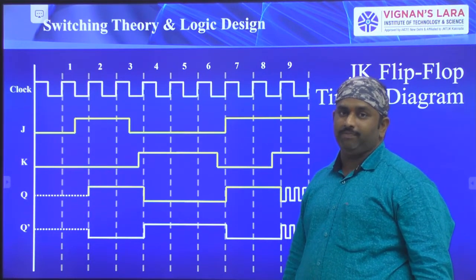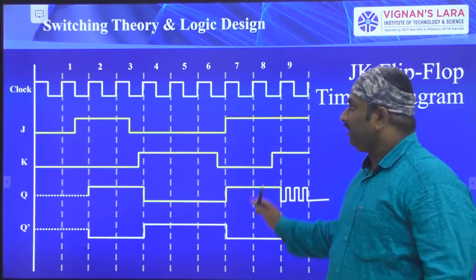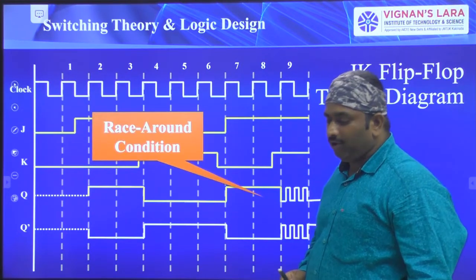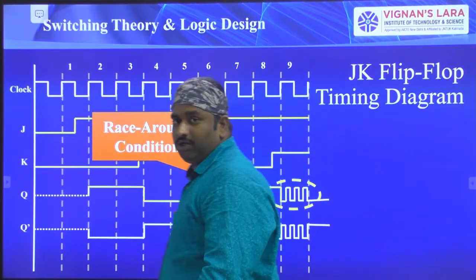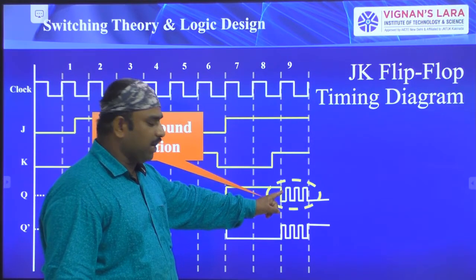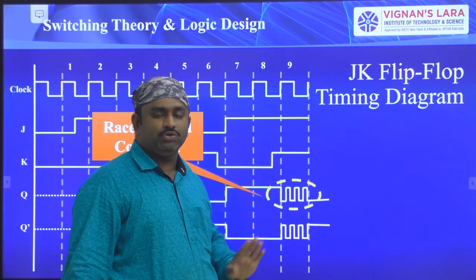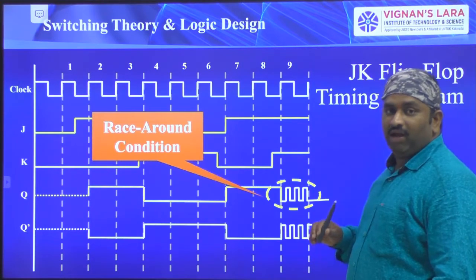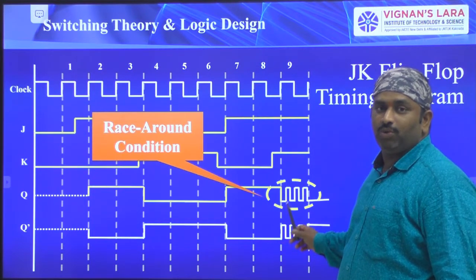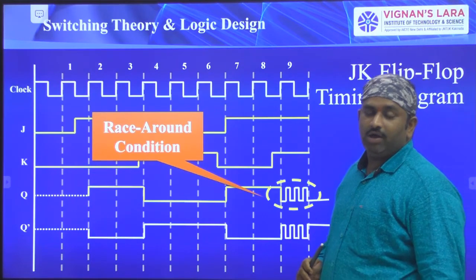Now let us see the JK flip-flop timing diagram. In this timing diagram, the clock signals are level-triggered — not edge-triggered. When level-triggered clock signals are used, when logic one is available, the output changes. The race around condition is represented here: whenever J equals one and K equals one, the output of the JK flip-flop continuously shifts from logic one to zero, zero to one, one to zero — shifting continuously whenever logic one is available. This toggling effect is called race around condition.